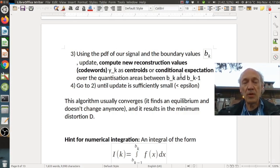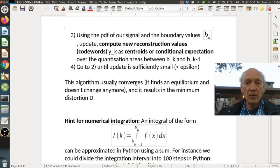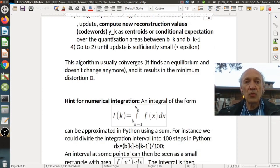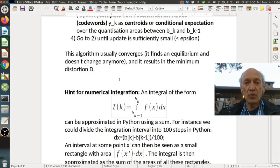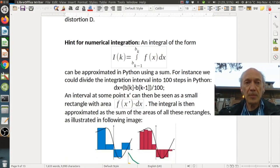When we have an unequal pdf we have an update here. It changes the y_k. Then we go back. A new y_k means different b_k's, different b_k's means new y_k's. And then usually this algorithm converges. It finds an equilibrium and doesn't change anymore and it results in the minimum distortion D. This is a heuristic experience that it converges. It doesn't have to. We have no guarantee.